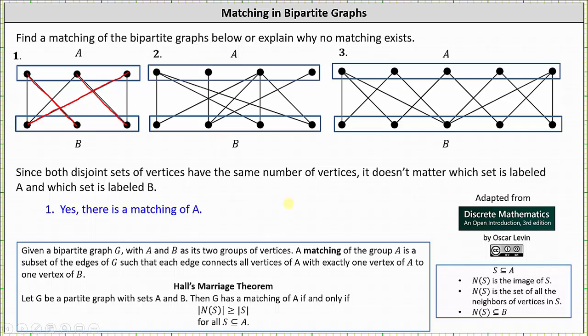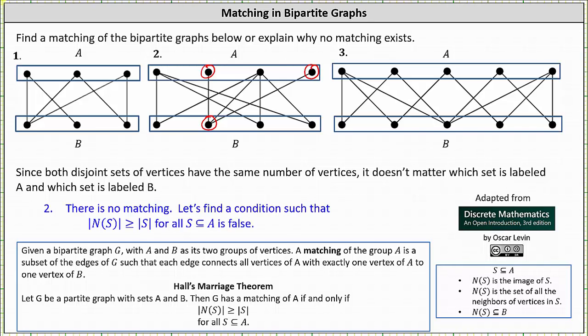And now let's look at number two. Analyzing it carefully, we should recognize a problem. If we focus on the second and fourth vertices in set A, notice these two vertices are only adjacent to the second vertex in set B. Notice in this case, there's no way we can connect these two vertices in A such that exactly one vertex of A connects to one vertex in B. Therefore, the answer is no, there is no matching of A.